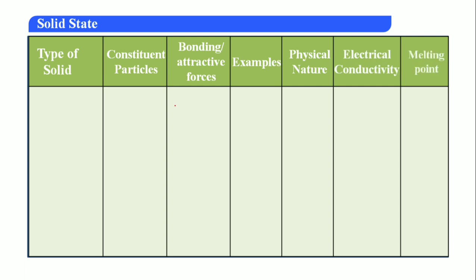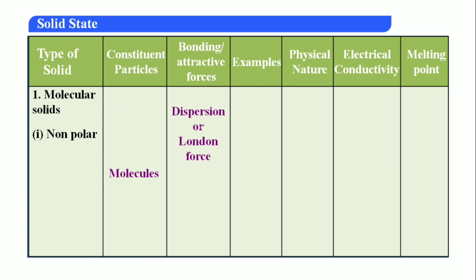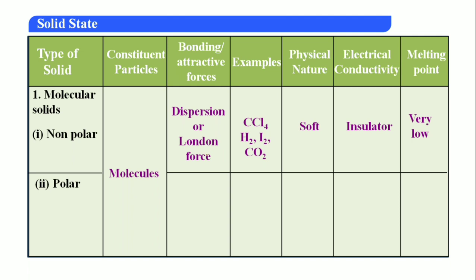Quickly reviewing the classification table — important for both competitive and board exams. Non-polar molecular solids: bonding force is dispersion or London force; examples are CCl₄, H₂, I₂, CO₂; physical nature is soft; electrical conductivity is insulator; melting point is very low. Polar molecular solids: dipole-dipole interaction; examples include CCl and SO₂; soft and insulator; low melting point.